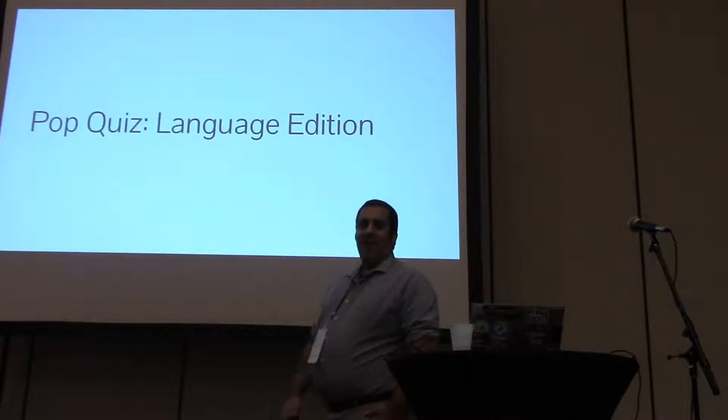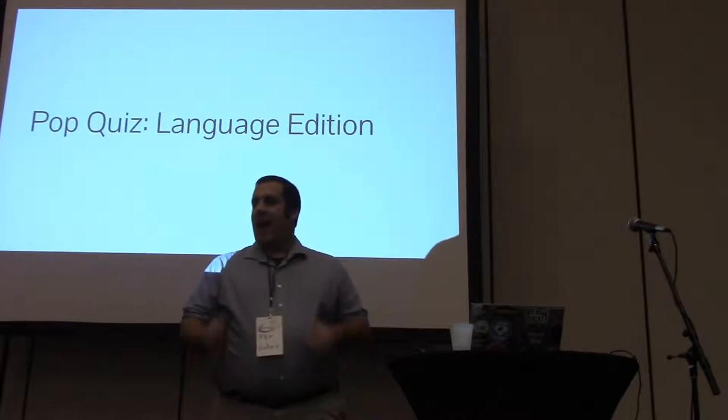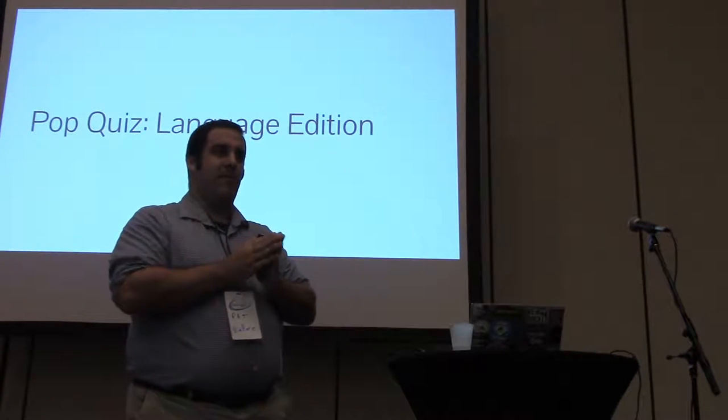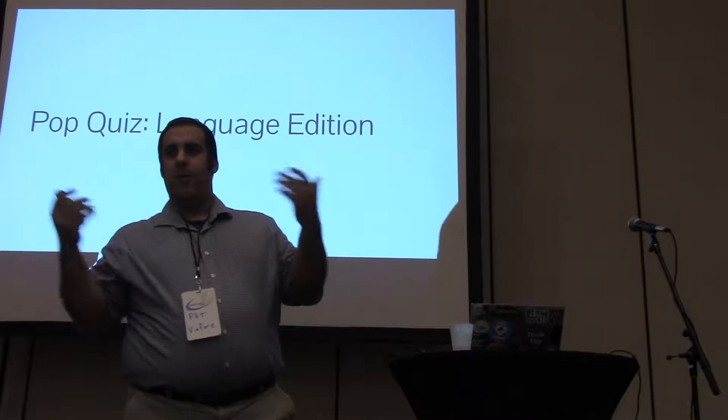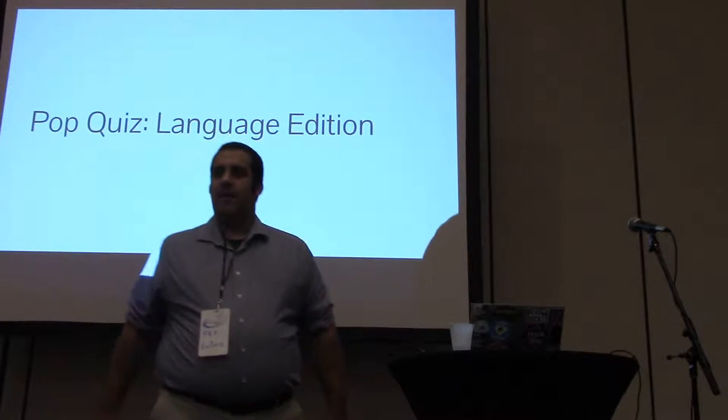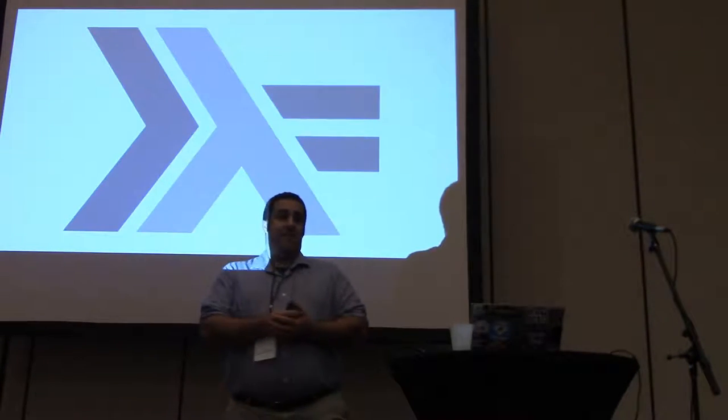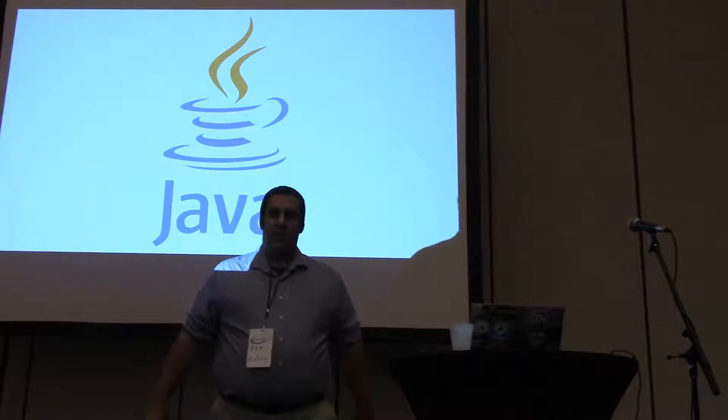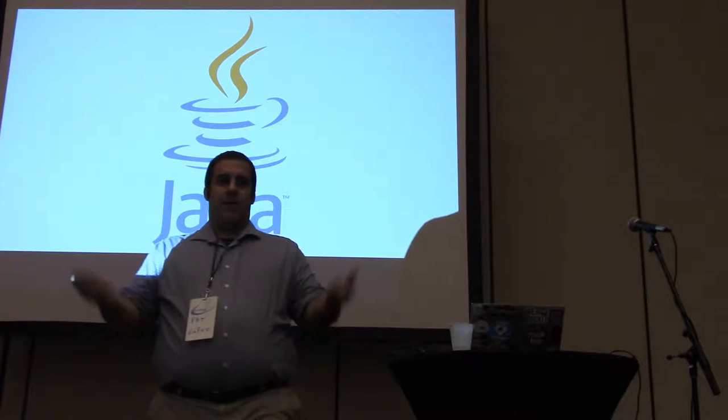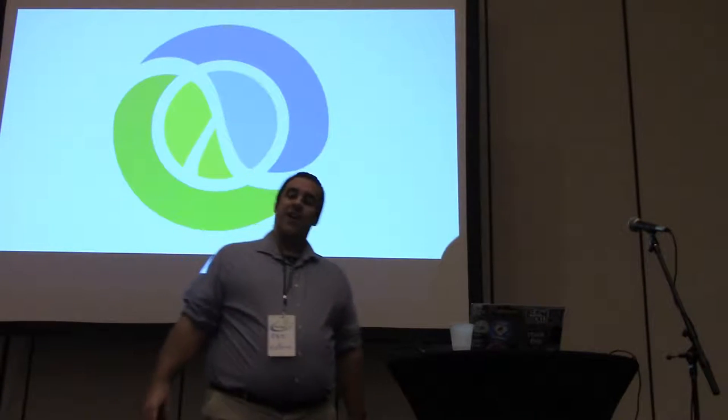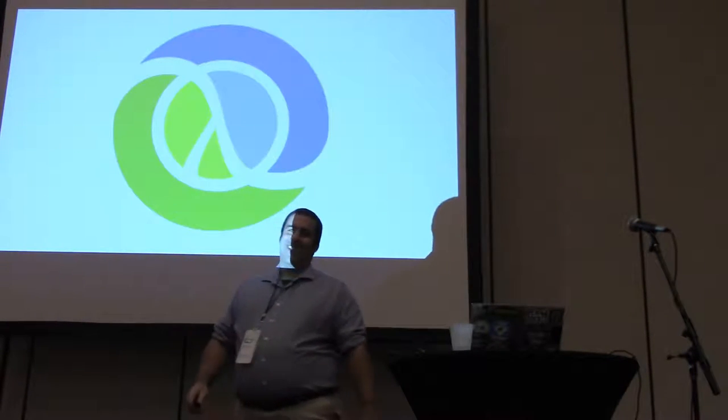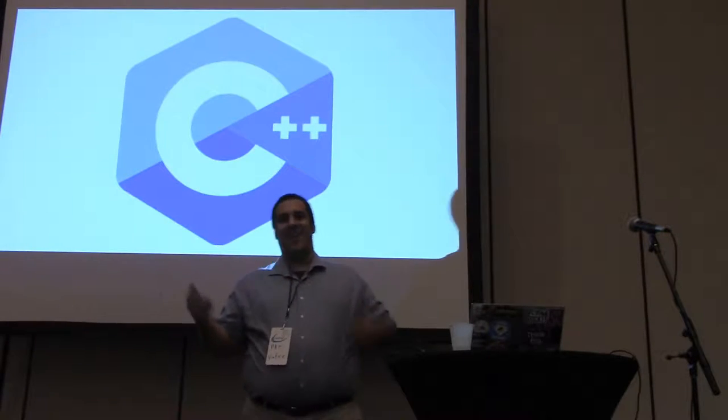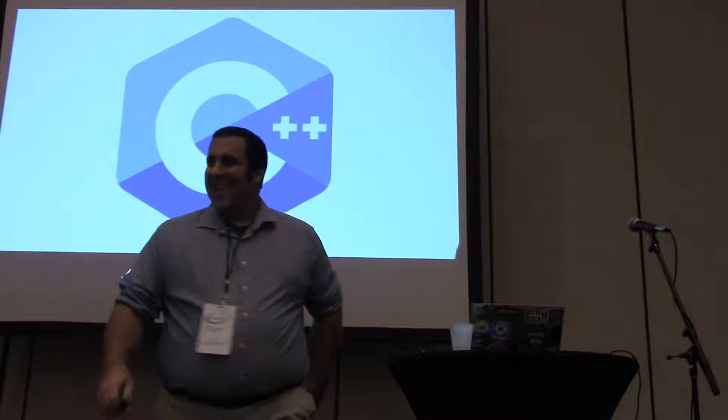We're going to start with a pop quiz. That's right. I'm making you do work right away. I'm going to show some languages up here. And I just want people to shout out whether you typically write functional programs with them or object-oriented programs with them. First up, Haskell. FP. Functional. Java. OO. Closure. FP. C++. None of the above, maybe.